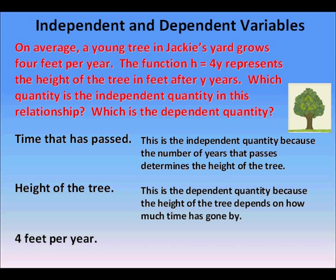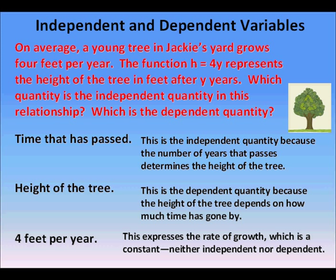The number 4 feet per year expresses the rate of growth of the tree per year, which is a constant, so this number 4 is neither independent nor dependent.